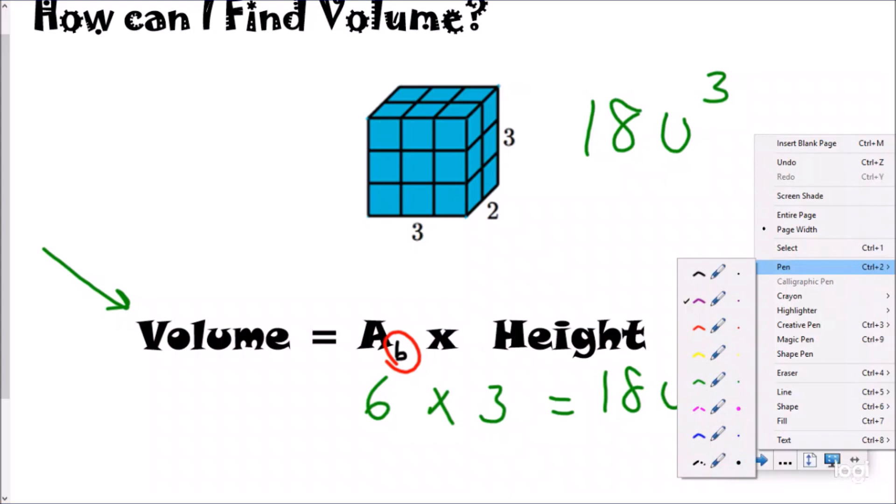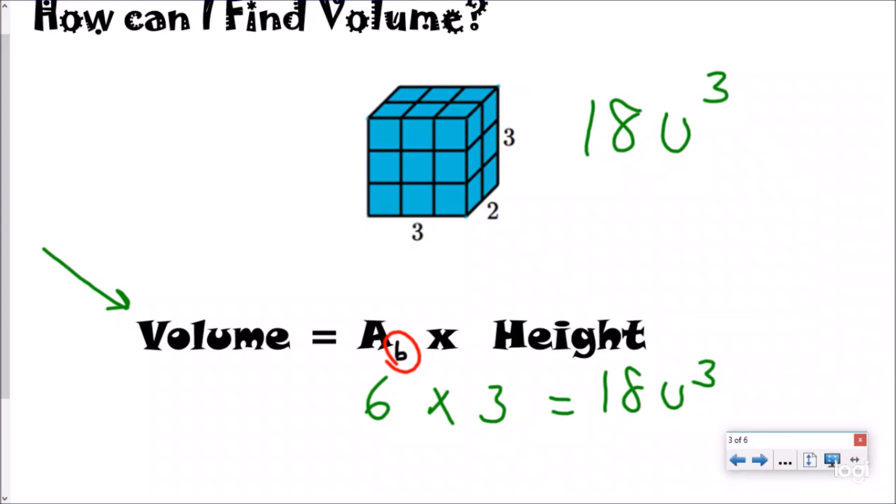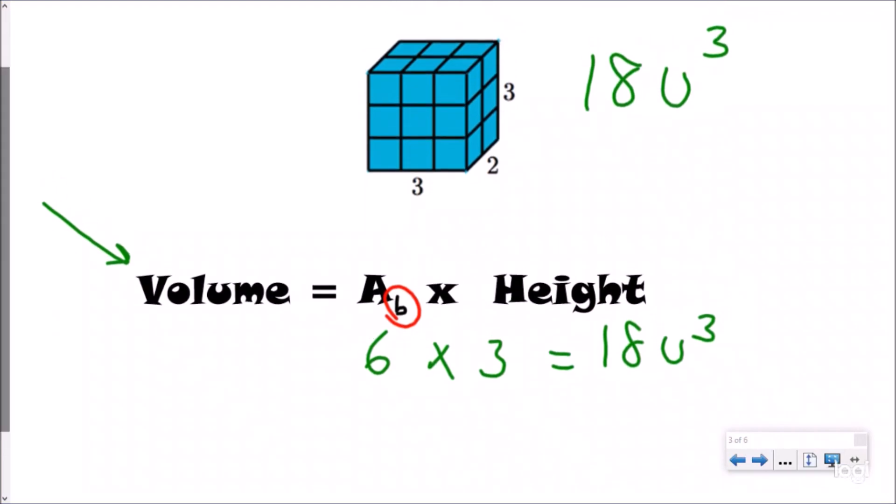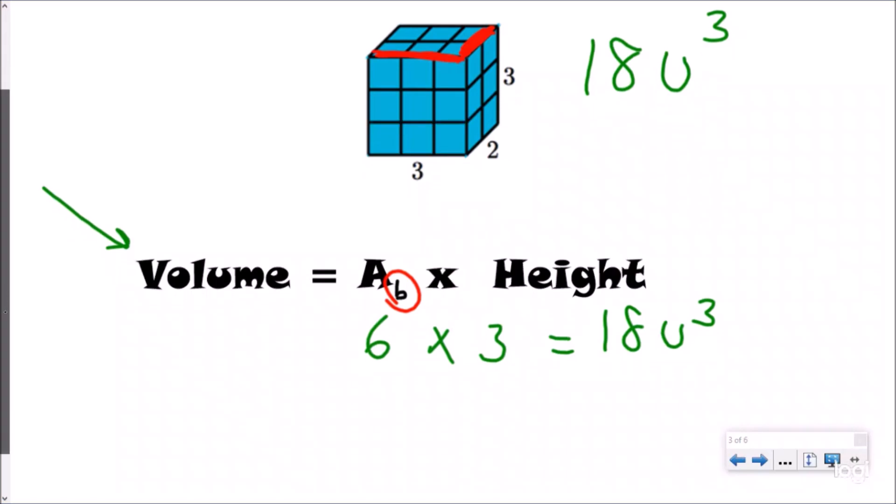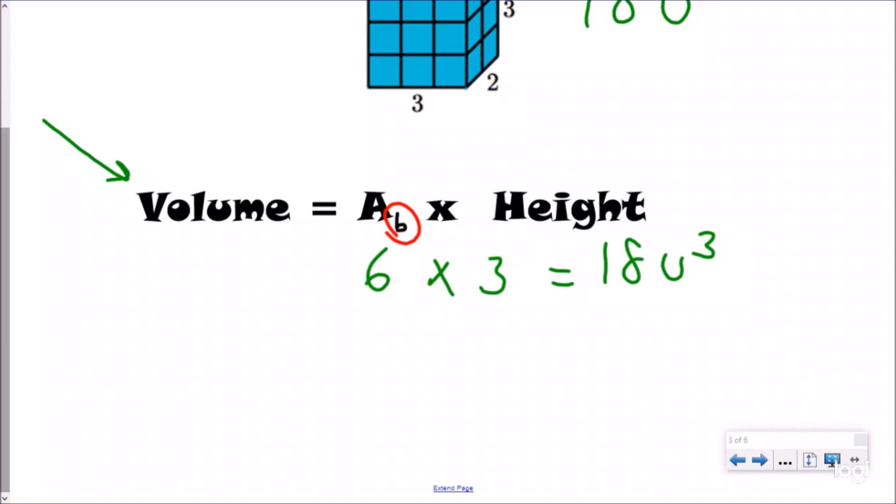Instead of counting the cubes on top, what we're going to do is take the area of the base and use our area formula of length multiply that by the width, which is two, to find the area of the base to still be six. So really what you just did is you took the area of the base and you did three times two, which is length times width, and then you still multiply that by how many layers, which would be three, and you're still going to get 18 cubed. So really, another volume formula a lot of people use is volume equals length times width times height, which is the same thing as just saying the area of your base times the height.